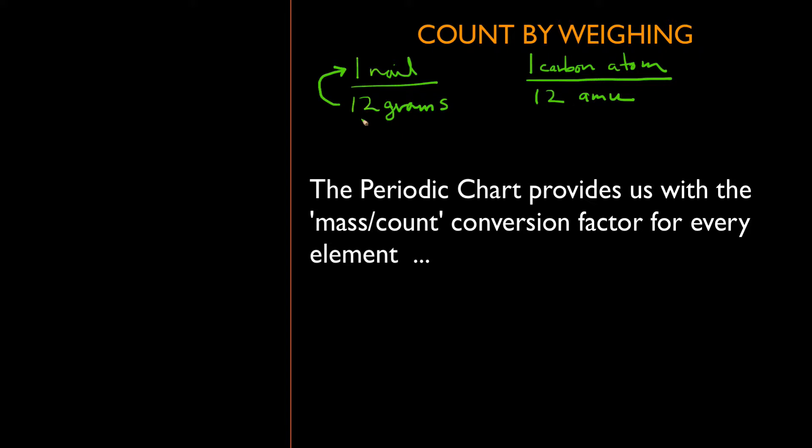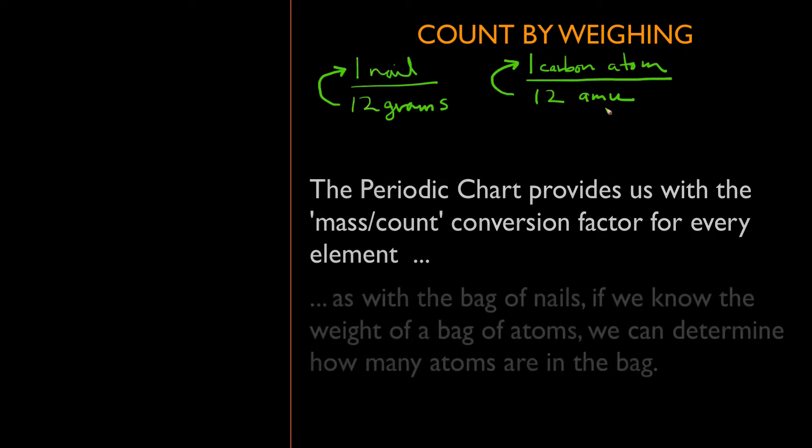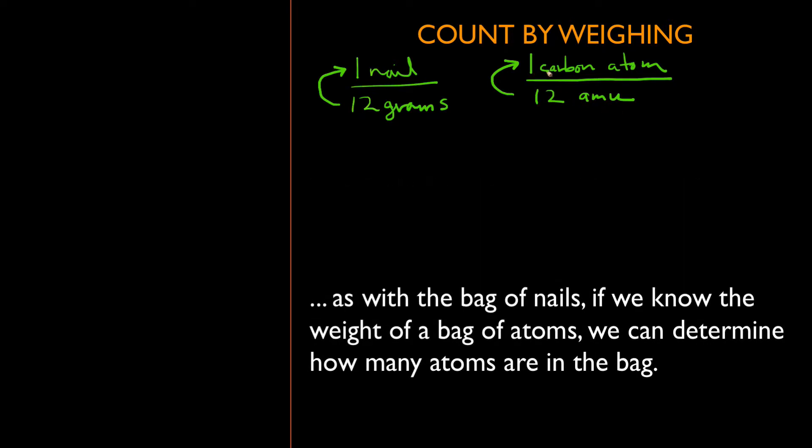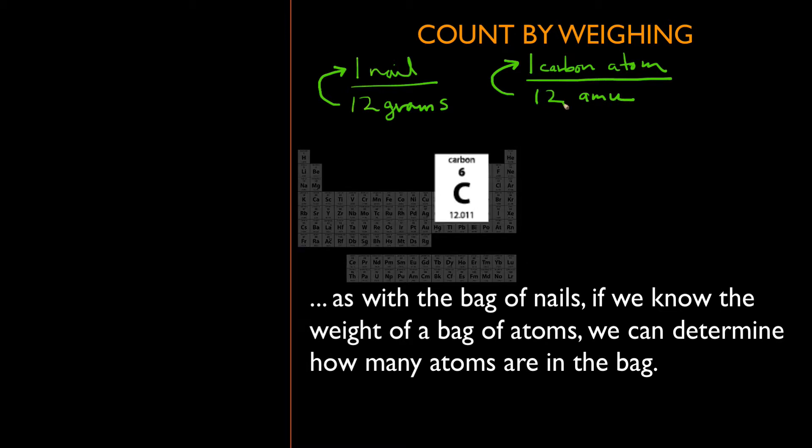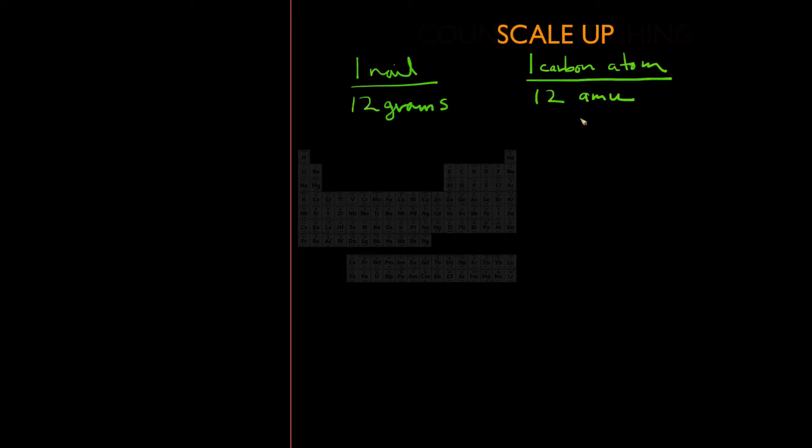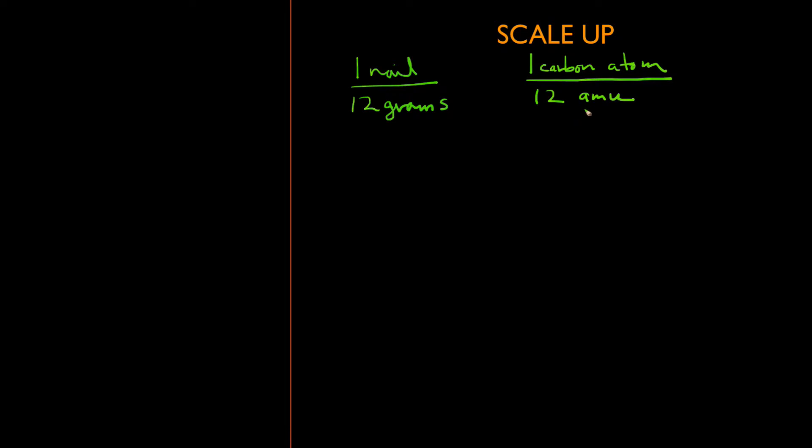This is a conversion factor. Note that the periodic chart does the same thing for atoms. For one atom of anything, the periodic chart tells us how much it weighs. We know one carbon atom, looking at the periodic chart, weighs about 12 amu or 12 atomic mass units. This gets us to the next subject of needing to scale up.